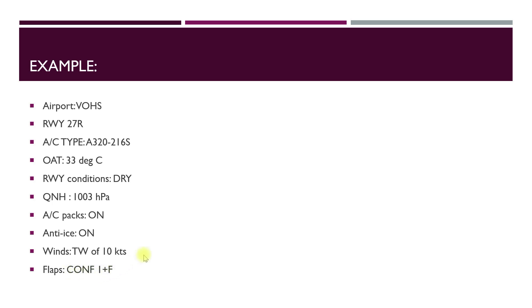The flaps we are about to use is config 1+F. I would suggest you note this example down on a piece of paper. I will mention in the description the link of the chart we are about to use. Every chart is specific to the airport, the runway, the runway condition, and the flap configuration, so we need to pull out the exact chart pertaining to our example. Download the chart from the description and let's move on to the steps required for the calculation.